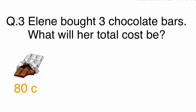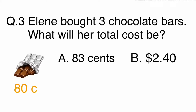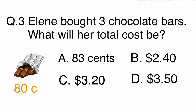Question 3. Elaine bought 3 chocolate bars. What will her total be? A. 83 cents, B. $2.40, C. $3.20, or D. $3.50.